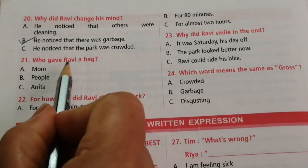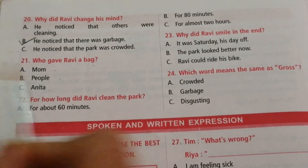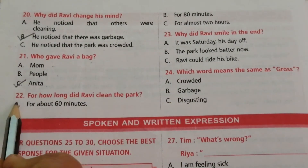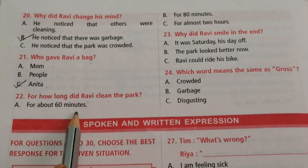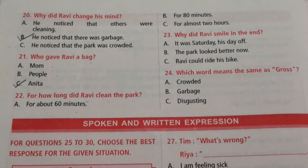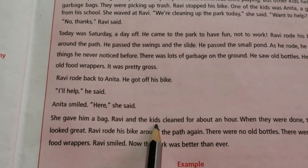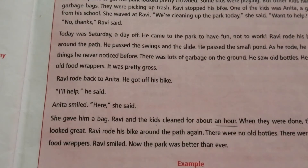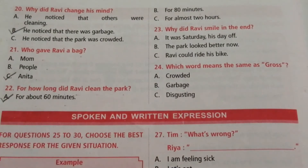Question 21: Who gave Ravi a bag? Options are mom, people, Anita. The answer is C — Anita. Question 22: For how long did Ravi clean the park? Options are for about 60 minutes, for 80 minutes, for almost 2 hours. From the passage: 'Ravi and the kids cleaned for about an hour.' An hour means 60 minutes. The answer is A — for about 60 minutes.